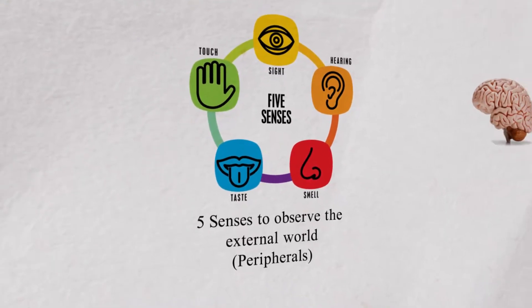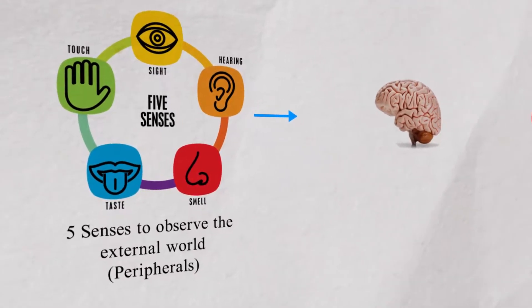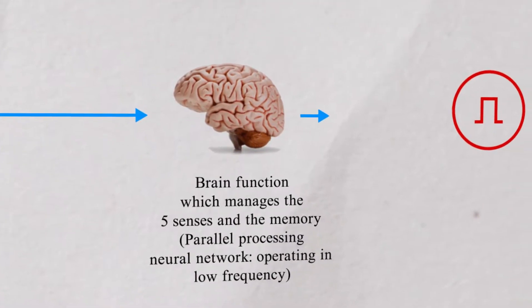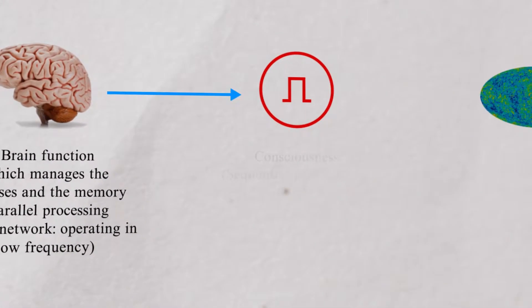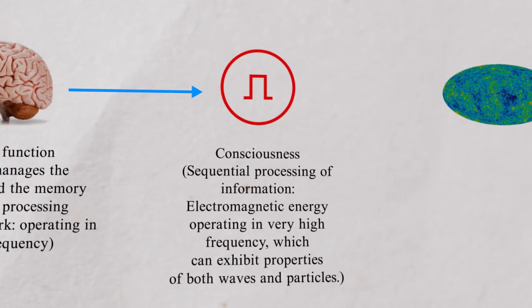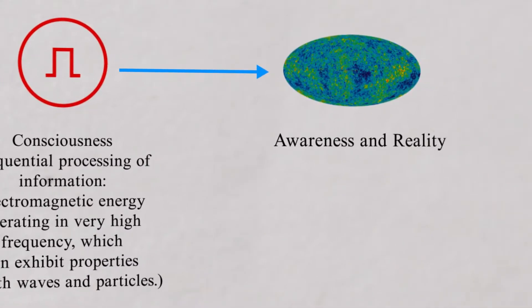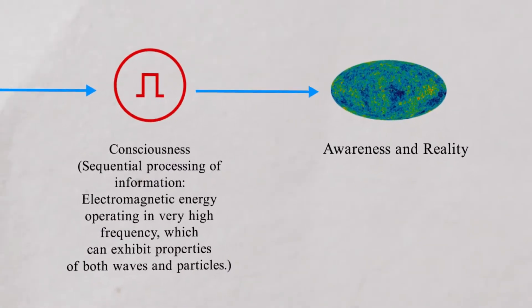We assume that, irrespective of parallel processing in the brain on the five senses, consciousness is sequential and focuses on a single piece of information at a time. Therefore, consciousness is operating at a very high frequency which can sample and be aware of the brain and sensory information.